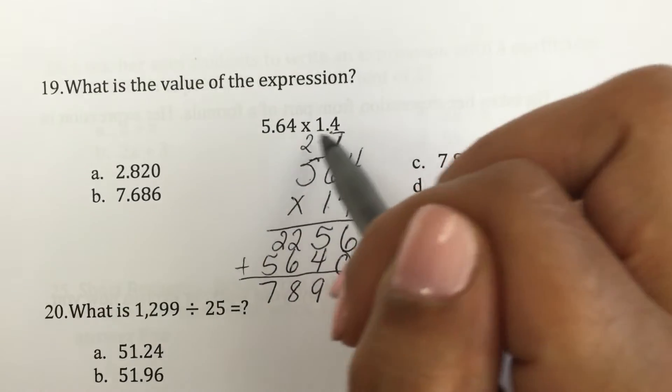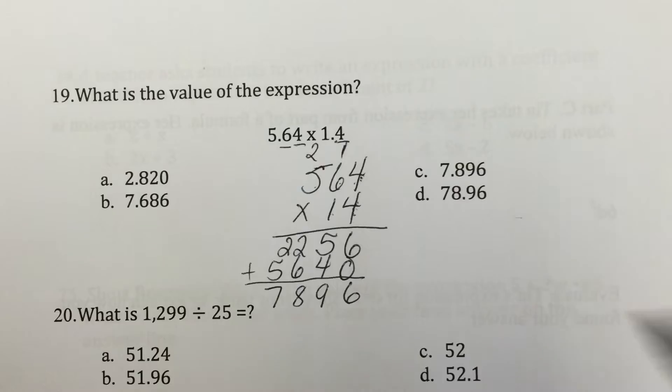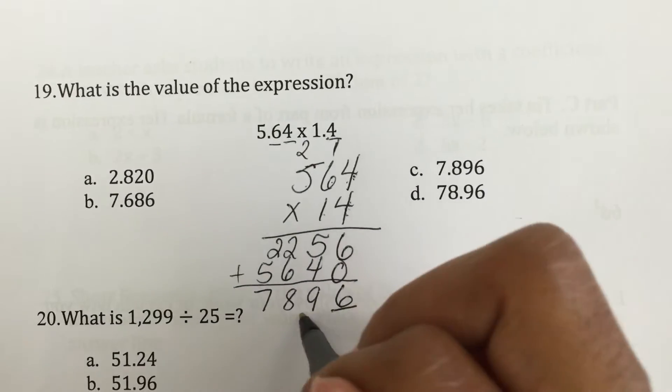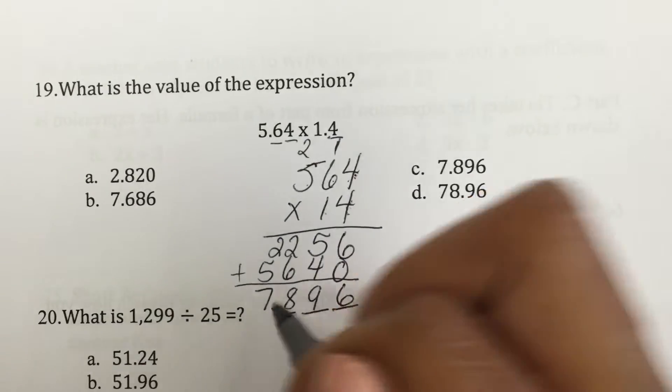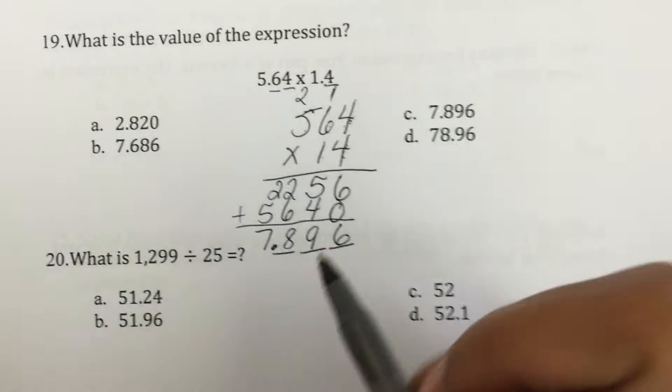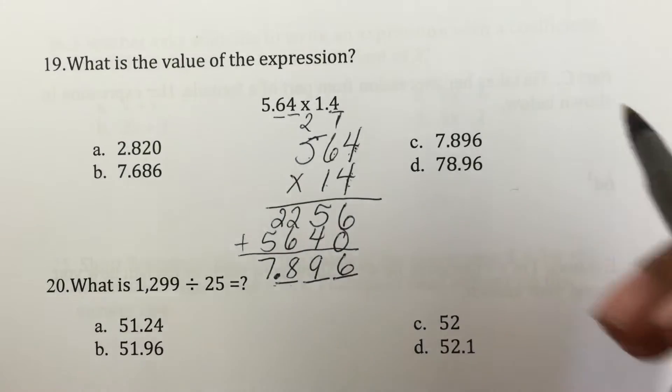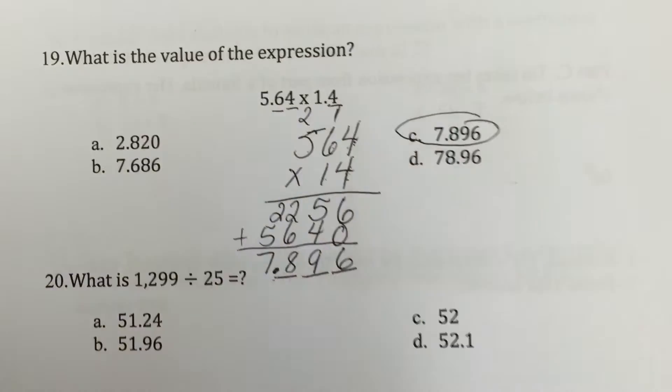Now I have to remember my decimals. I have 1, 2, 3. So just like the song, to the left, to the left. Move that decimal all the way to the left. And I got 7 and 896 thousandths. Matches my work.